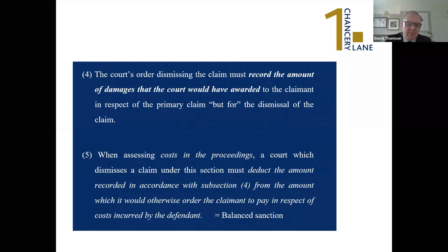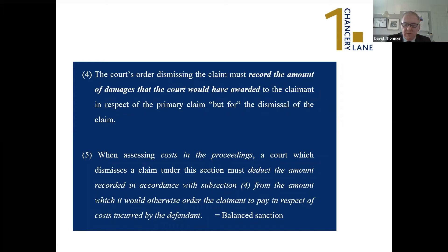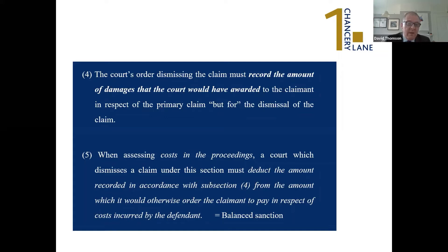It can be a claim where the claimant has been honest in many aspects but fundamentally dishonest in parts of it, and the whole claim can still be dismissed. What the court has to do — because this is a balanced sanction — is look at the amount of damages the claimant would have recovered and set that off against the costs due to the defendant, since QOCS will no longer apply. The court deducts those damages as a starting point from the costs due to the defendant. So it is a balanced sanction.